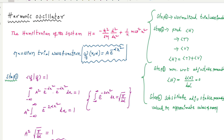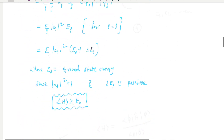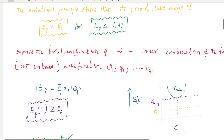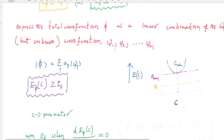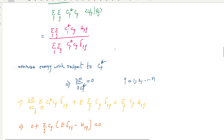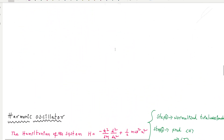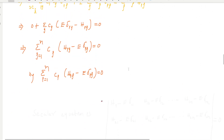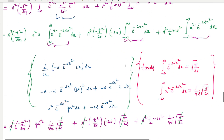The variational principle states that the ground state energy is always greater than or equal to the calculated energy — that is, the expectation value of the energy of the given system. There are four basic steps involved in calculating the energy of this harmonic oscillator.